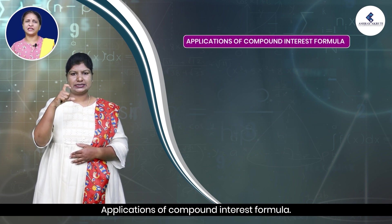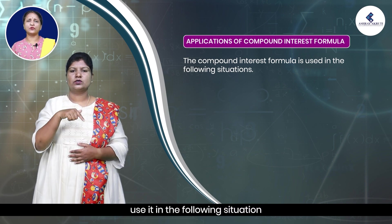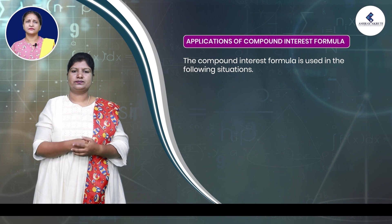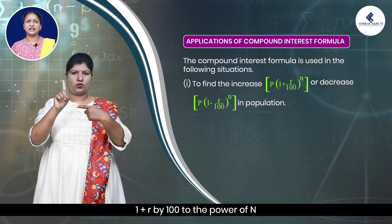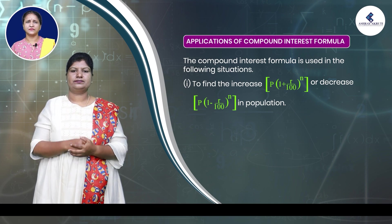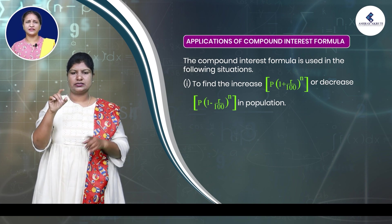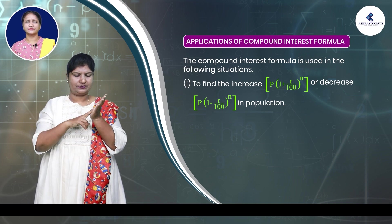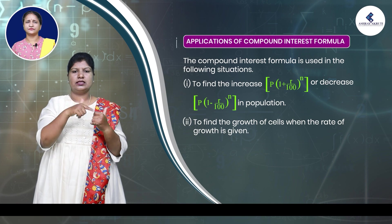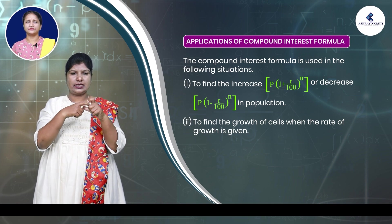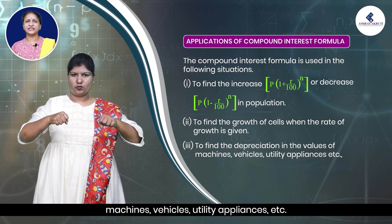Applications of the compound interest formula. The compound interest formula is used in the following situations. First, to find the increase — P into (1 + r/100)^n — or decrease — P into (1 − r/100)^n — in population. Second, to find the growth of cells when the rate of growth is given. Third, to find the depreciation in the value of machines, vehicles, utility appliances, etc.